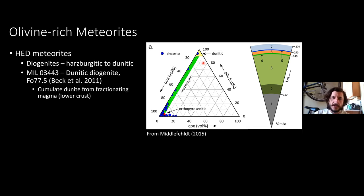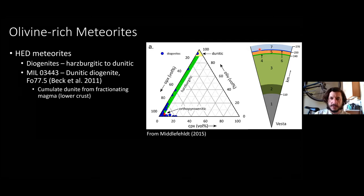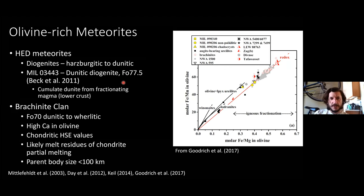The diogenites are the lower crustal cumulate materials from Vesta, as opposed to eucrites which are more crustal and plagioclase-rich. Examples with olivine are few and far between. The brachinite meteorites are different — they're not related to Vesta. They're forsteritic (Fo70), dunitic to wherlitic rocks with high calcium in olivine and chondritic highly siderophile element values, suggesting they're likely melt residues of chondrite partial melting.